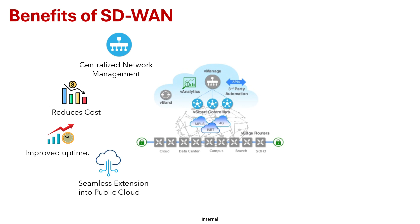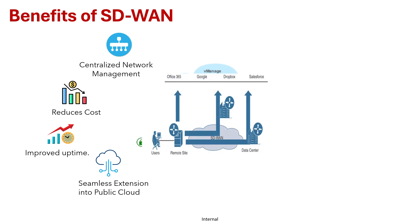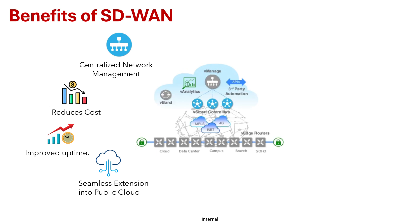There is also seamless extension into public cloud — today's digital enterprises need to seamlessly extend the network into public cloud. In traditional WAN, traffic has to go to HQ, but SD-WAN offers direct cloud access, connecting branch locations directly to cloud services without backhauling traffic to the data center. It also supports multi-cloud integration with AWS, Azure, and Google Cloud, improving performance and reducing latency.